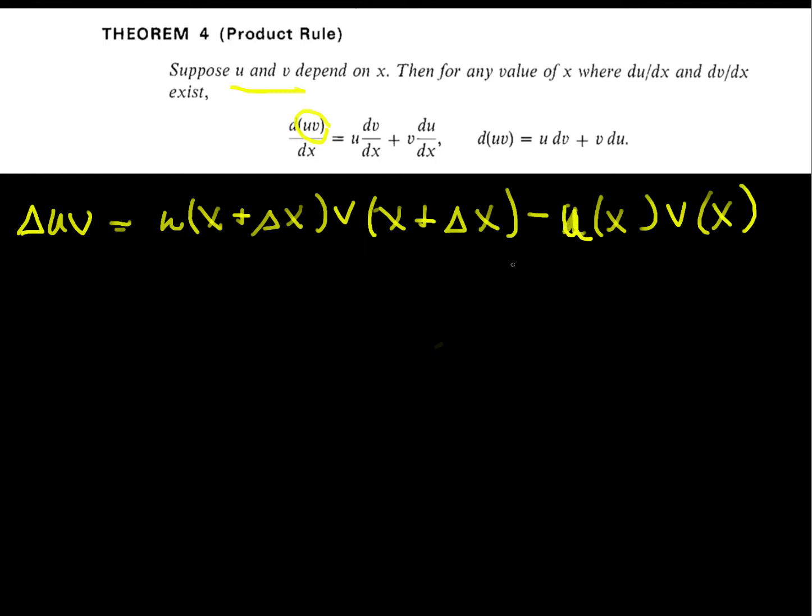So at first blush, it doesn't seem like there's a lot we could do algebraically to work with this, but because I know where we're going, I'm going to introduce a real slick factor. So this is equal to u of x plus delta x, v of x plus delta x.